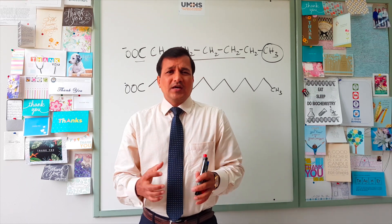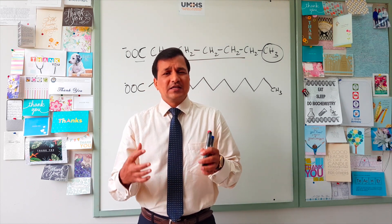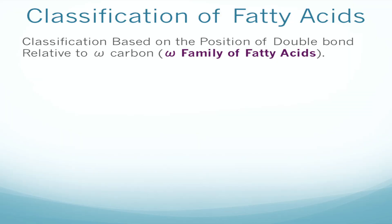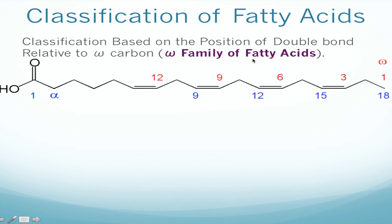Coming to polyunsaturated fatty acids, we can further classify them into the omega family of fatty acids. Before getting into that, let me explain how to number the carbons in a fatty acid. The carboxyl carbon is number one, then number two, three, four, and so on all the way to carbon 18. The blue-colored numbers you see here represent the classic way of numbering a fatty acid.